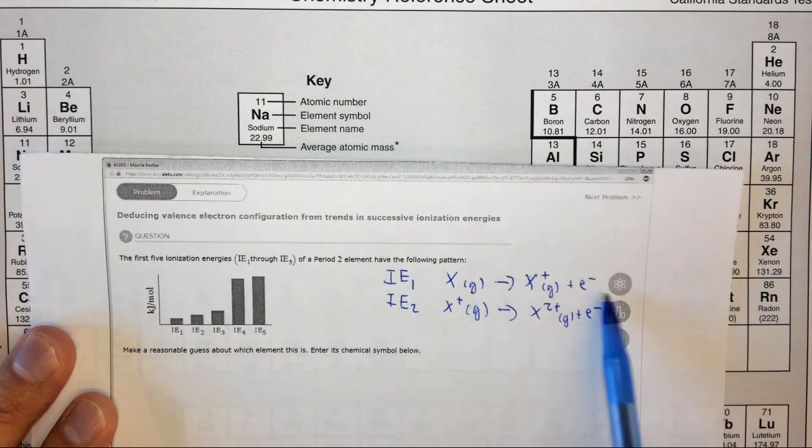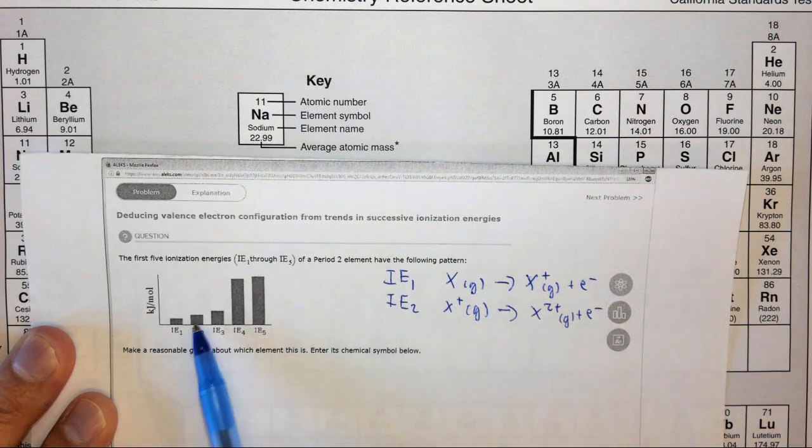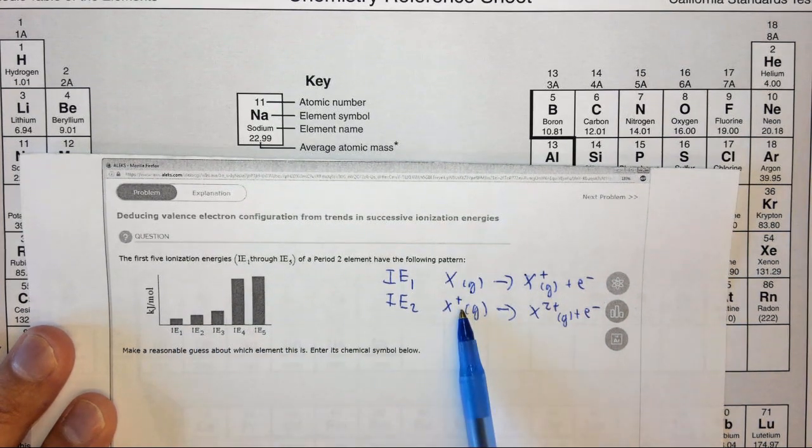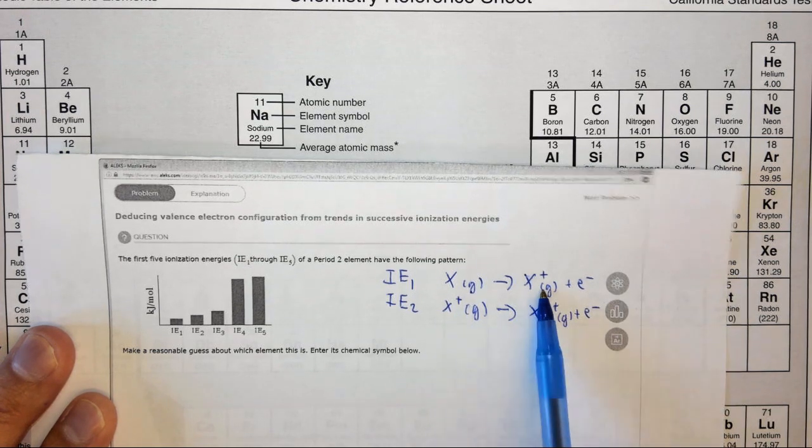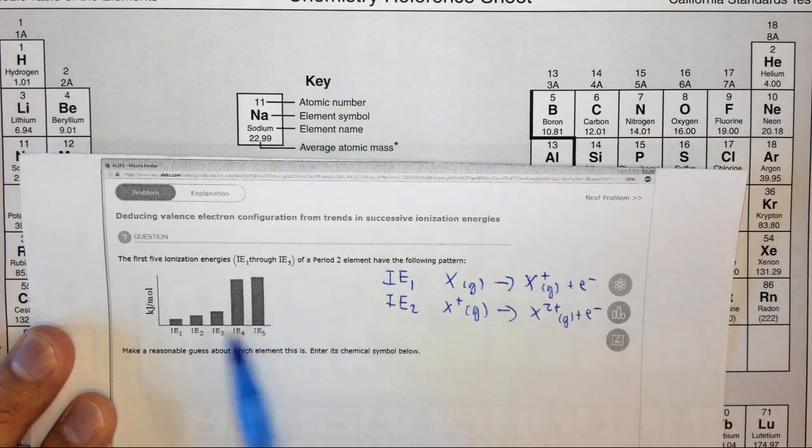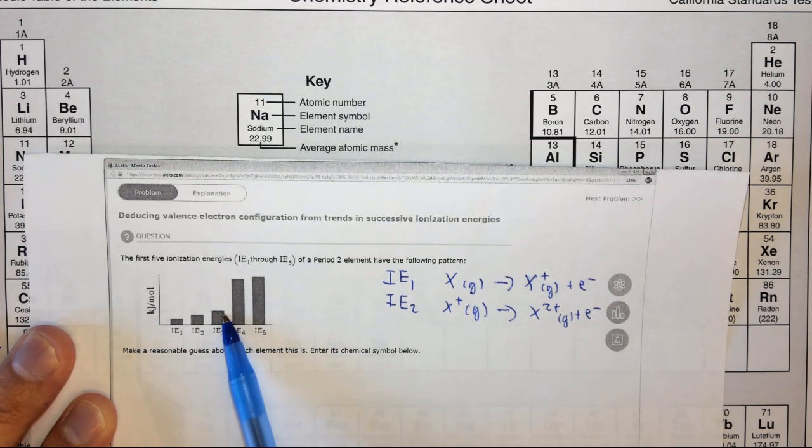It stands to reason that taking away the first electron will take less energy than the second electron, because this is already positively charged. So it's going to hold on to that electron more strongly than the first one. And then the third one takes even more energy, but by the time you get to the fourth one it takes a whole lot of energy.